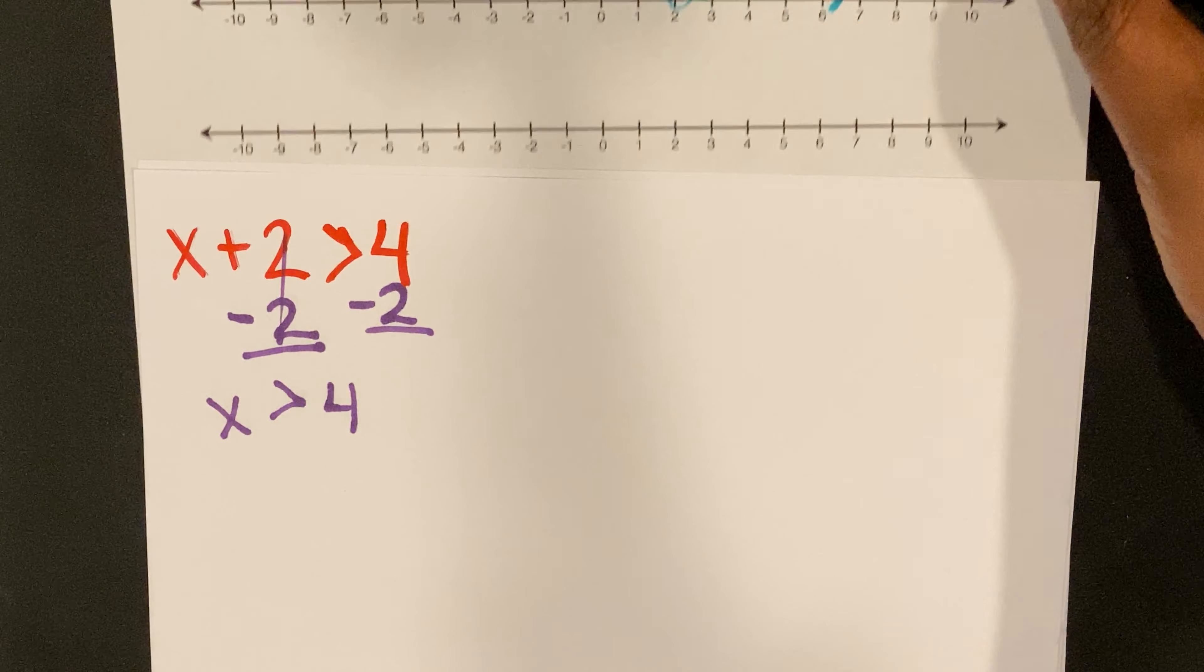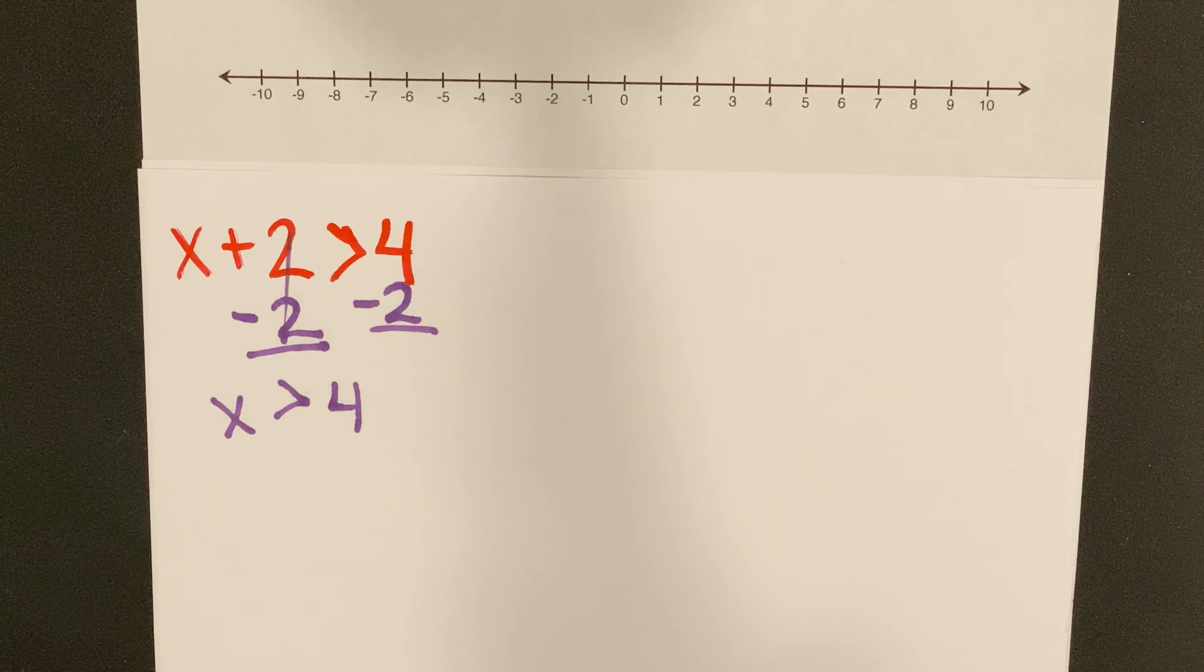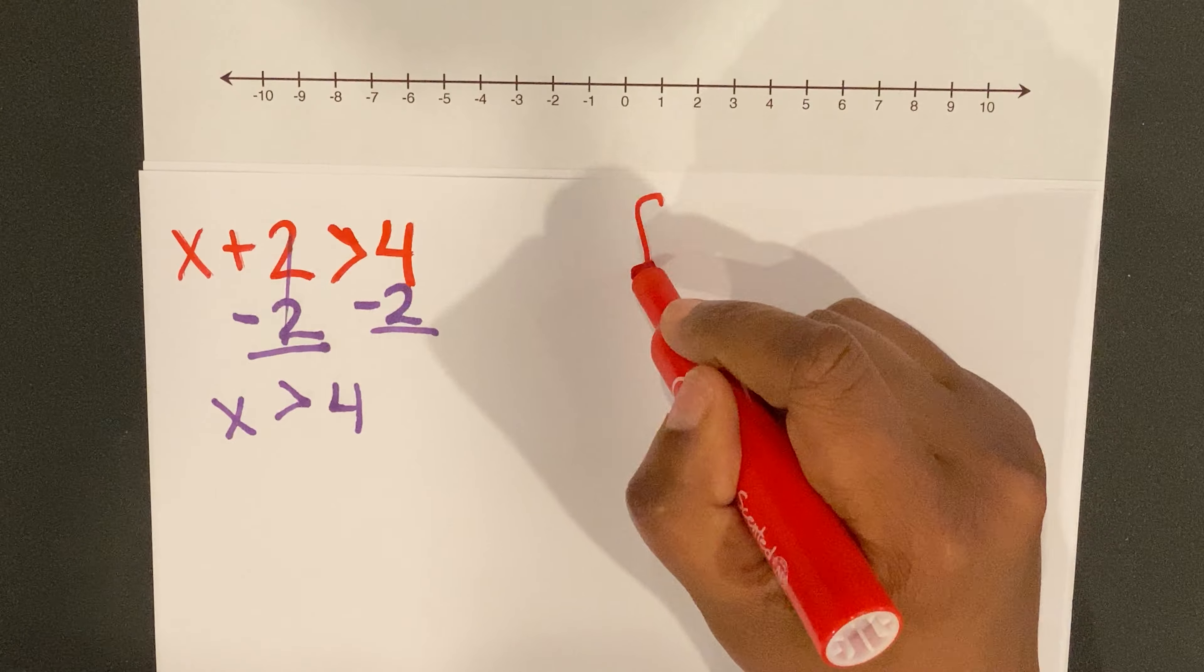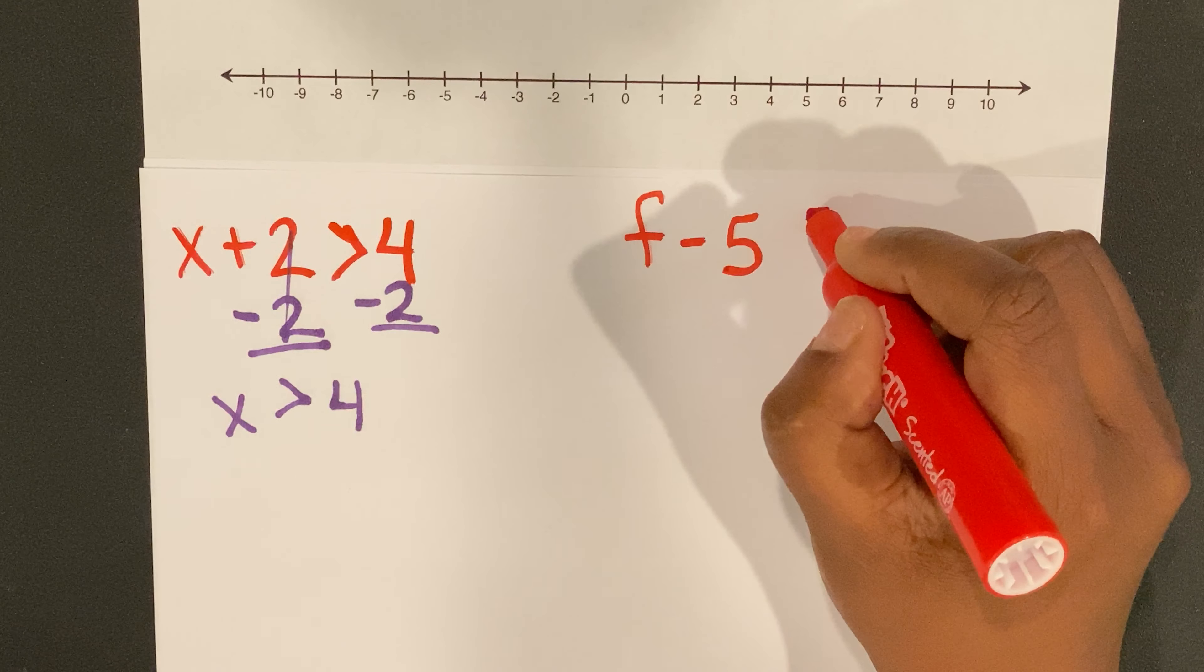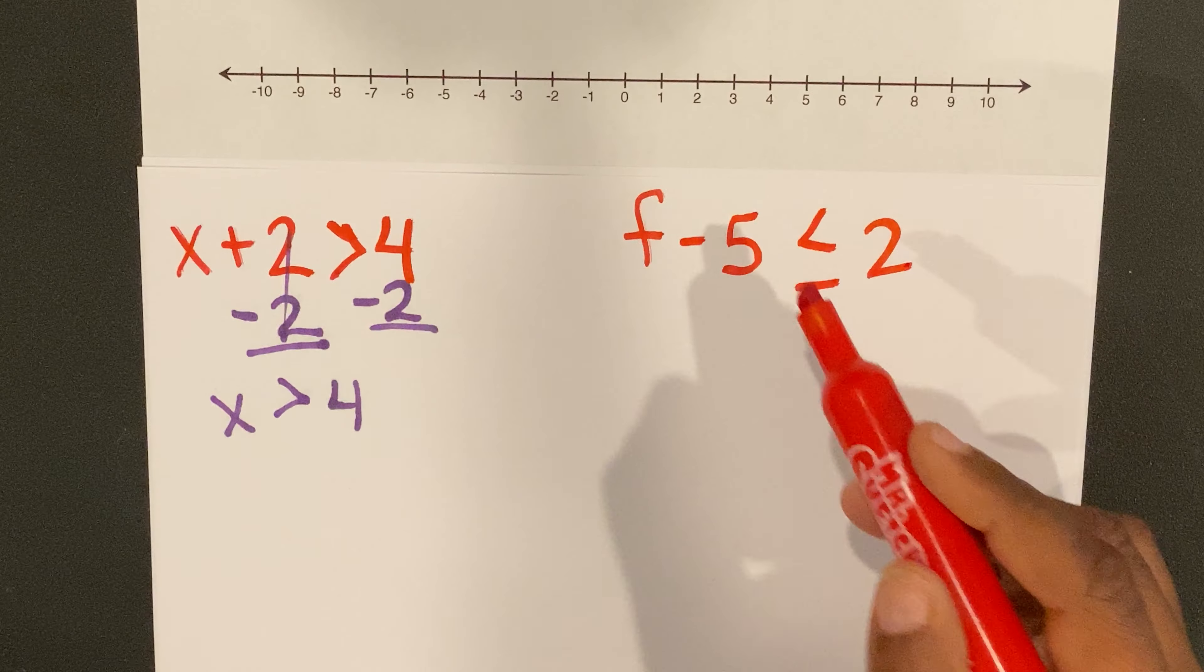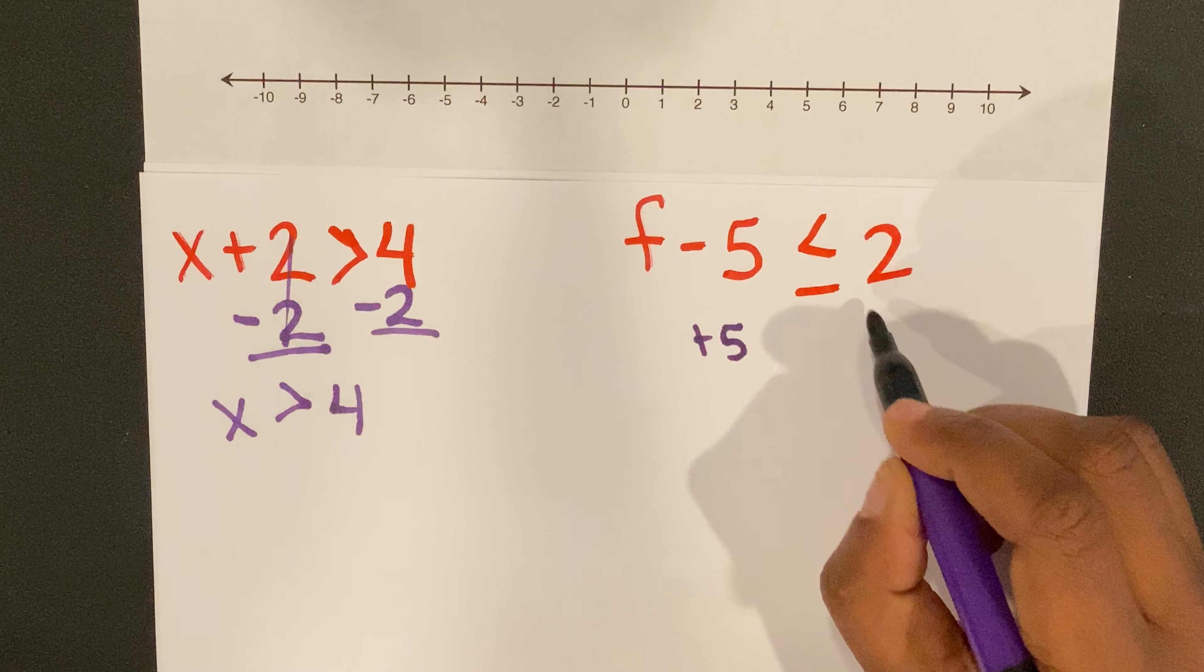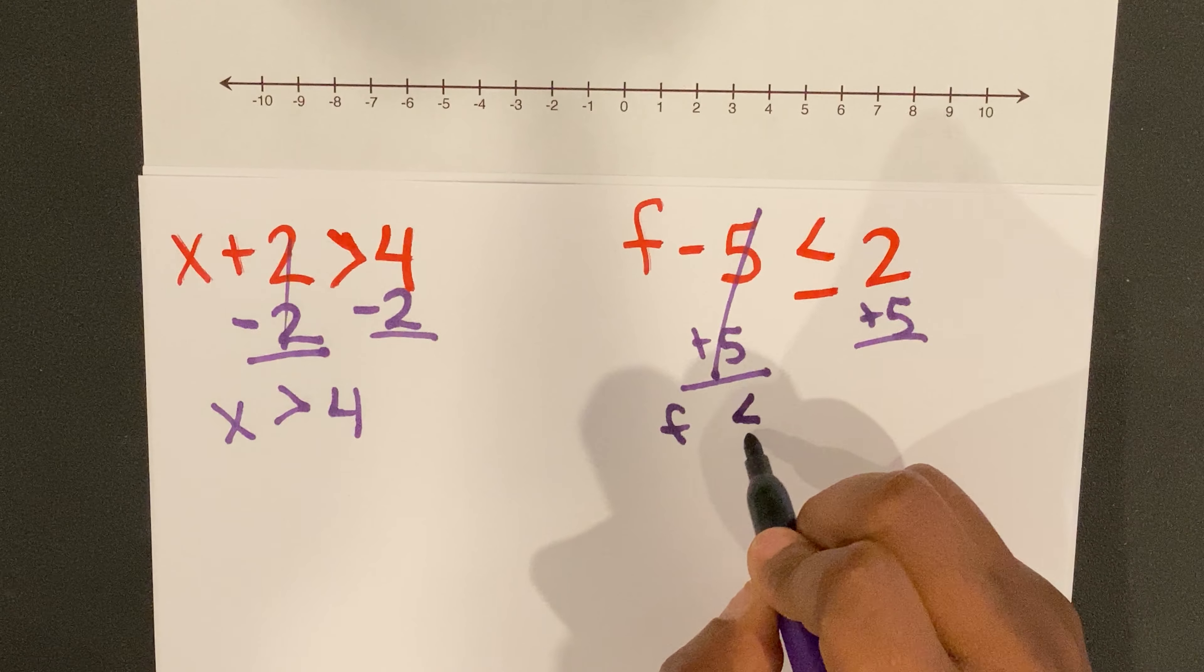All right, so let's look at another example. Let me do a subtraction one. f minus five is less than or equal to two. So what are we going to do first? I'm still going to do the inverse of my constant. I'm still going to add five because that allows it to zero out. Keep the sign the way I see it. f is less than or equal to seven.